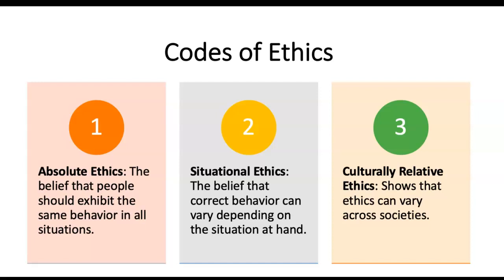Last but not least is culturally relative ethics, which shows that ethics can vary across societies. For example, here in the U.S. we believe that relationships should be based on love. Whereas in certain other cultures, love is not considered as important, and parents are trusted to know better — so arranged marriage is culturally acceptable and considered a better match than marrying for love. I want you to think about examples for each type of ethics, which I'll ask about at the end of this lecture.